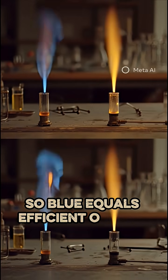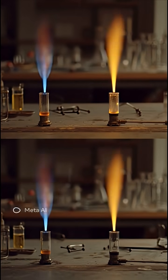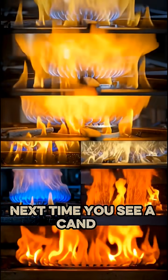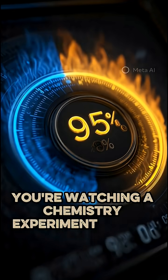So blue equals efficient, oxygen-rich combustion. Yellow equals inefficient, soot-filled glow. Next time you see a candle, you're watching a chemistry experiment in real time.